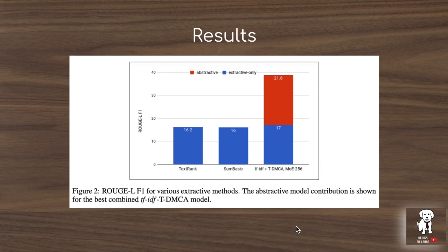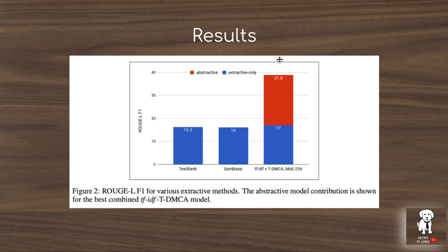This plot further shows the results of using an abstractive summarization model on top of the extractive summarization model. It shows the performance of two other extractive methods, TextRank and SumBasic, which perform about the same as TF-IDF. However, adding the abstractive summarization layer on top of the extractive summarization consistently yields better performance on the overall summary of the input documents.